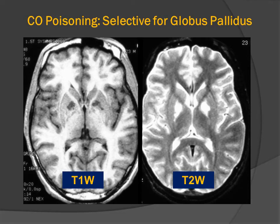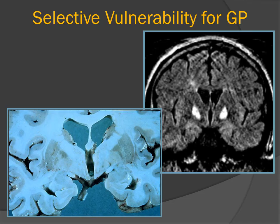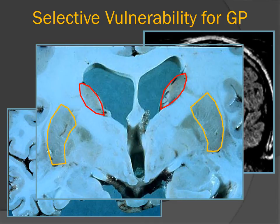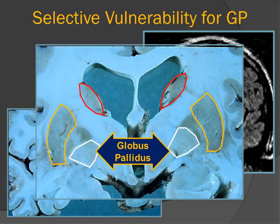Carbon monoxide is selectively toxic for the medial lenticular nucleus or the globus pallidus, producing an increase in the content of water and restricted diffusion, as we saw in our case. At autopsy, the patients will demonstrate corresponding lesions in the medial lenticular nucleus. Here we see the caudate nuclei, the putamen — which is the lateral portion of the lenticular nucleus — and abnormal pallor, or loss of color, in the medial lenticular nucleus, which is the globus pallidus.